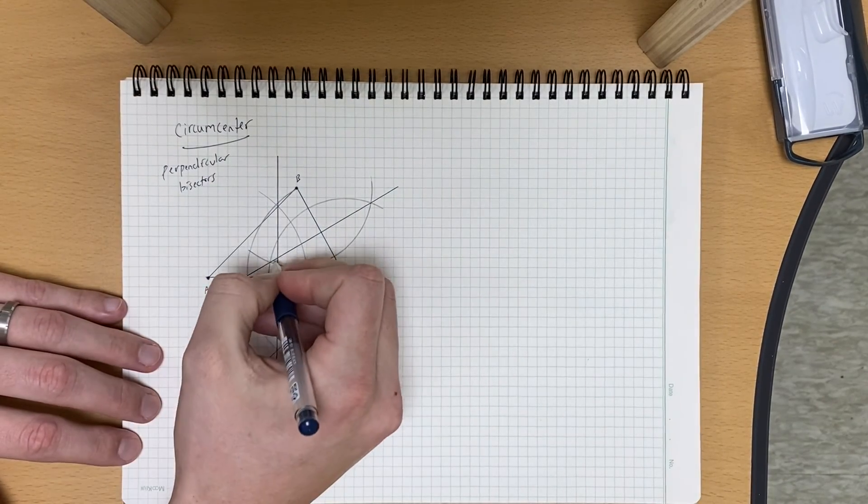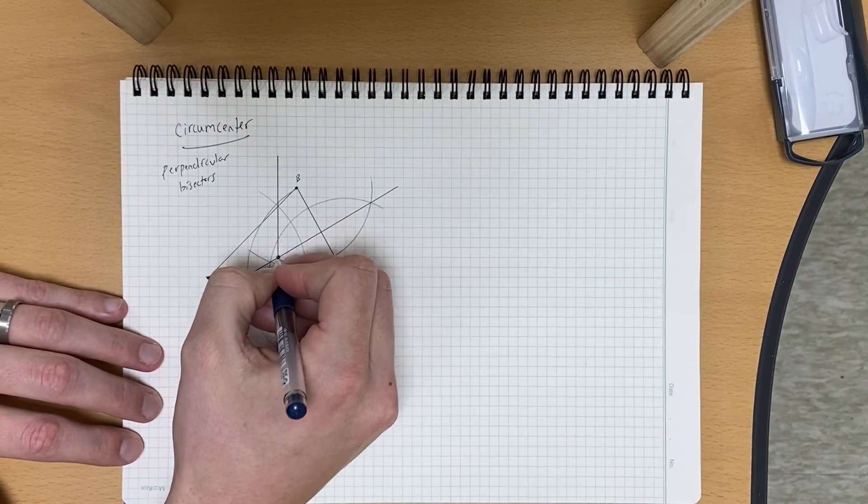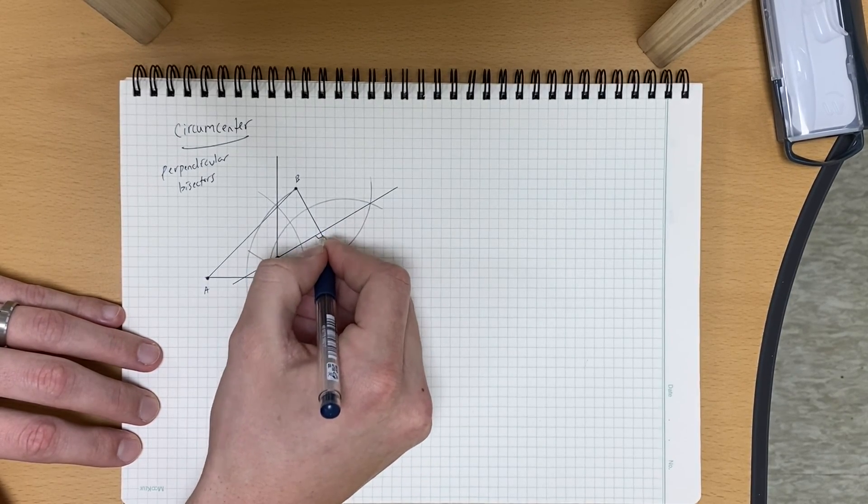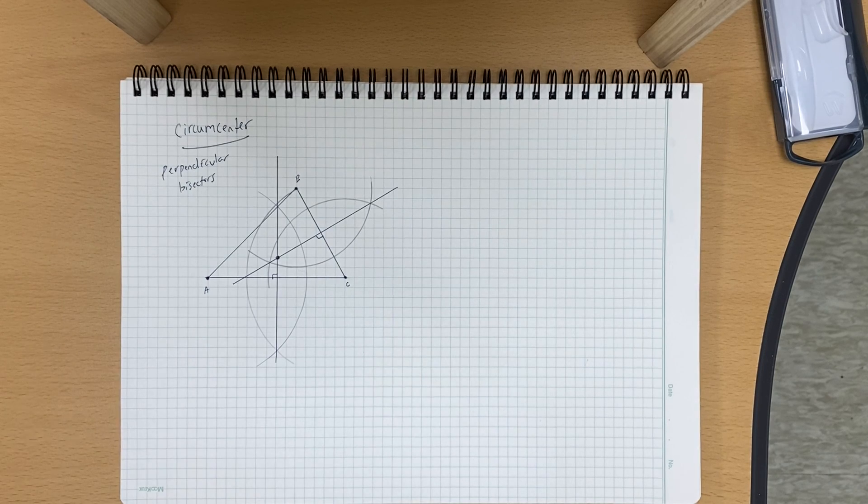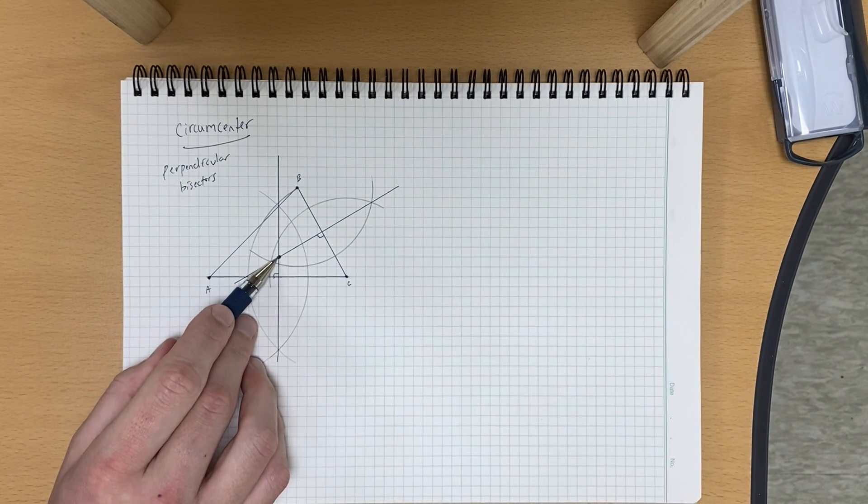And notice we have this point right here of intersection. So let me draw my perpendicular boxes there. All right, so let's do AB, and it should cross right there at that point.